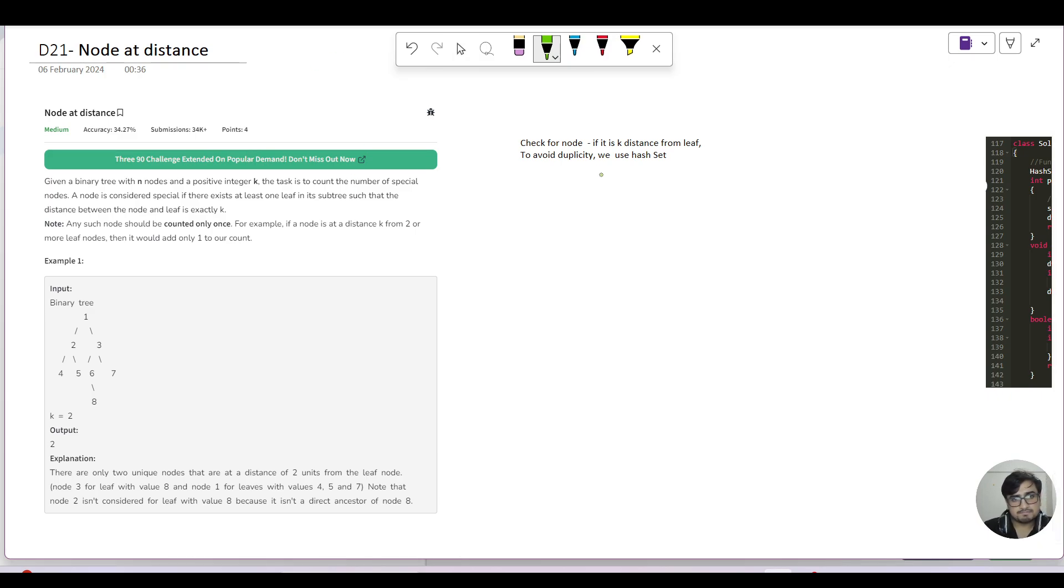So we can do this question. How can we do this? For each and every leaf node, right, and what we can find is that for each and every node, if it is k distance from the leaf, then we'll add it in an answer or we will say answer plus plus. But I can clearly see that node 1 is at k distance from 4, 5, and 7. So I cannot increment my answer 3 times. I just want to increase it once. So if a particular node is at k distance, then we will add that particular node in a hash set because it doesn't allow duplicity. That's why we will use a hash set and just return the set.size.